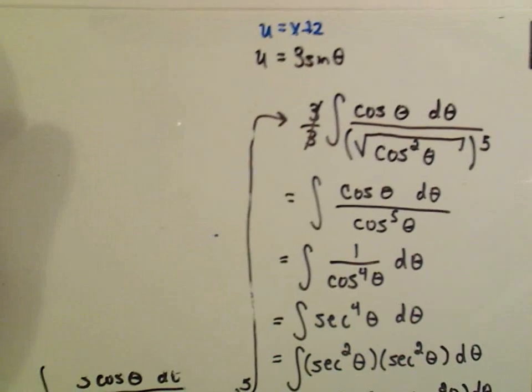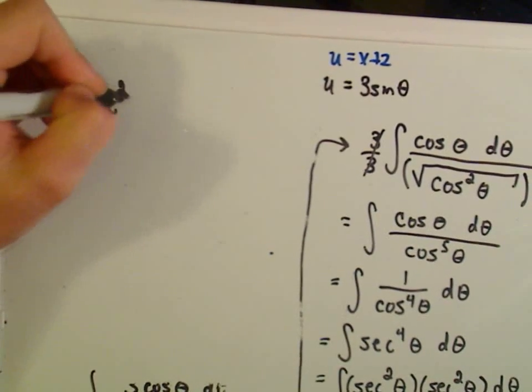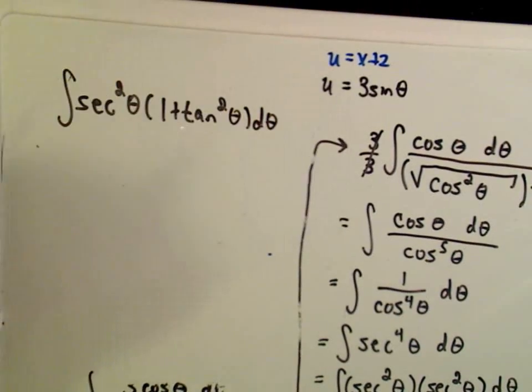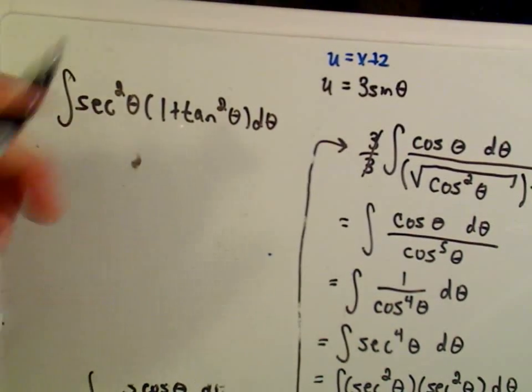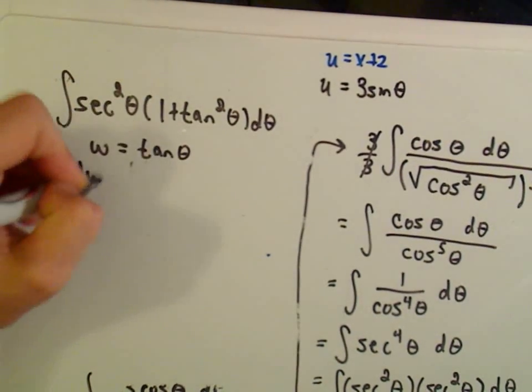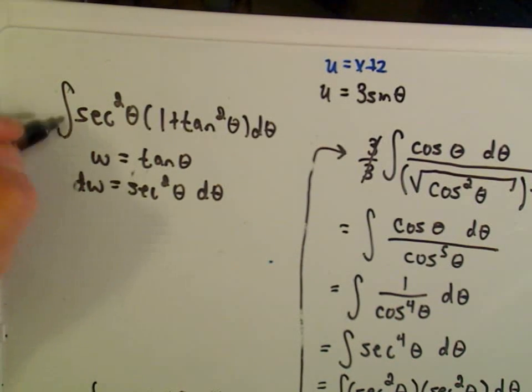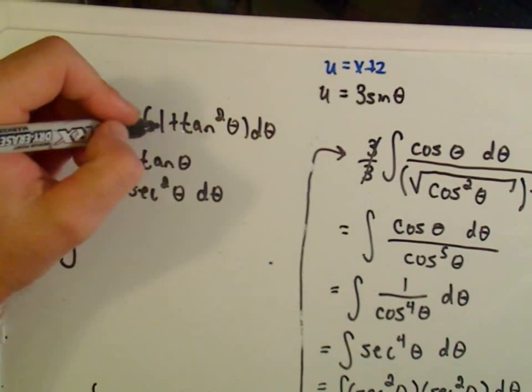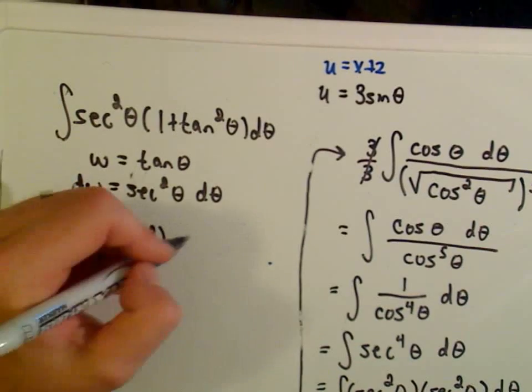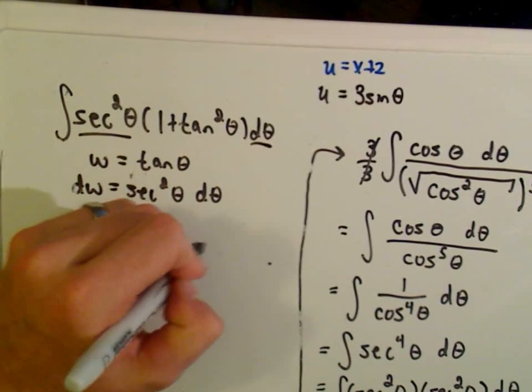Alright, so at this point, we've got to integrate secant squared 1 plus tangent squared. Very long. And what we have to do in this case is we just, I guess I shouldn't use u again, we'll use w. w equals tangent theta. The derivative of w is secant squared theta, d theta. And now if I replace all of my stuff with that, it says w is tangent theta, so I'll get 1 plus w squared. And then dw took care of the secant squared theta, d theta, so I'll just have 1 plus w squared, dw.